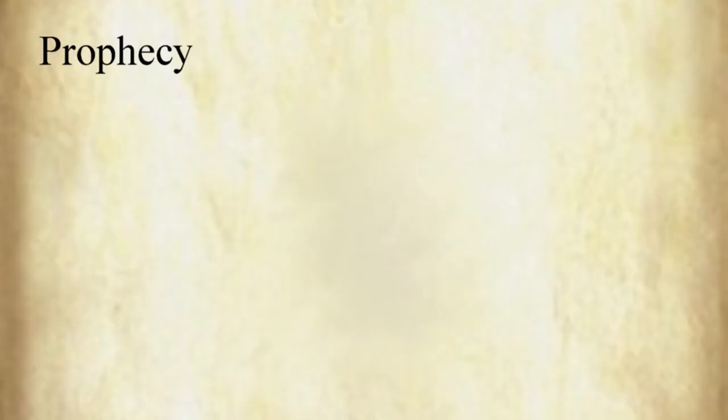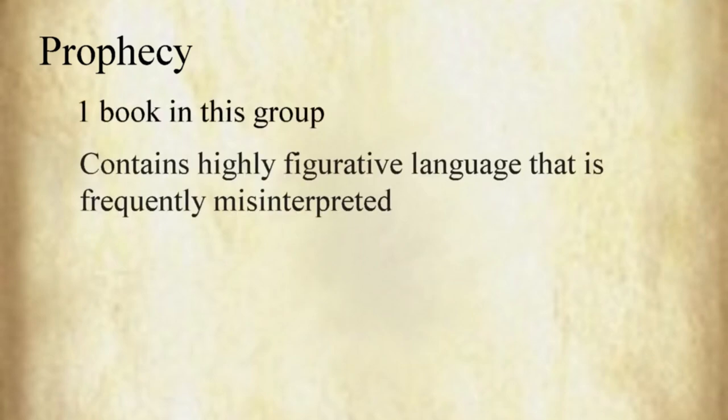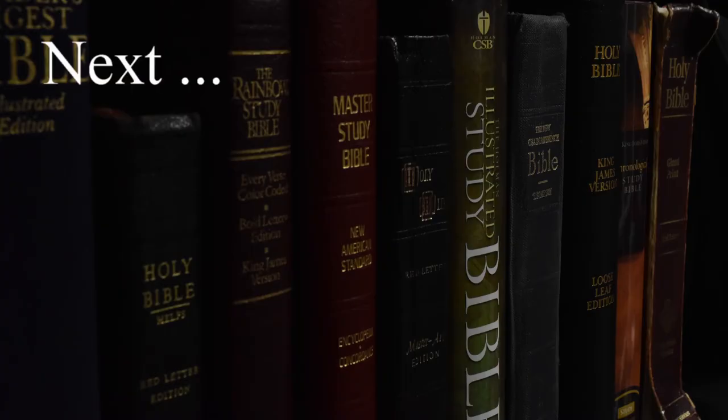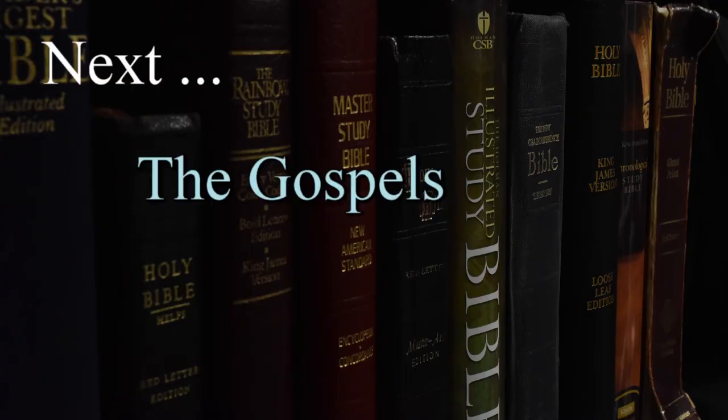The final category in the New Testament is that of prophecy. There's one book in this group containing highly figurative language, which is frequently misinterpreted. This book is Revelation. In the next video, we'll look at the Gospels.